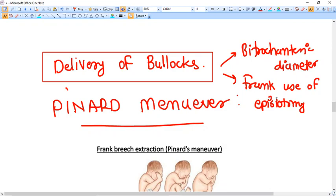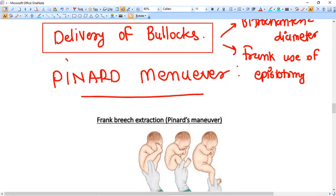Let's start from the delivery of buttocks. Whenever you do delivery of buttocks, the diameter that comes is bitrochanteric diameter. Okay, and at this time you need to do what, use frank use of episiotomy because it saves and does his wonder for the breech delivery.